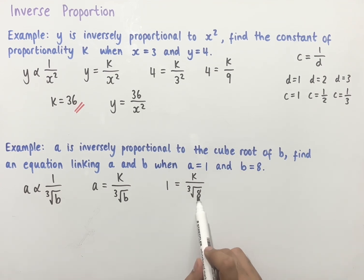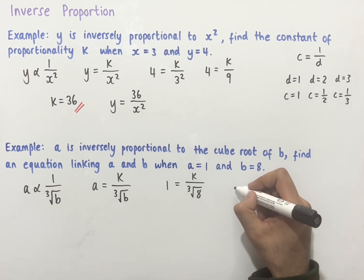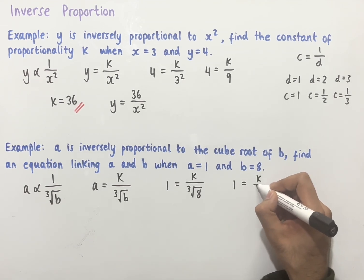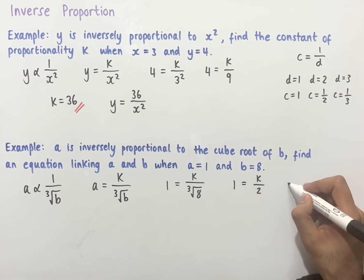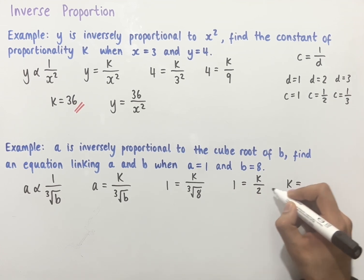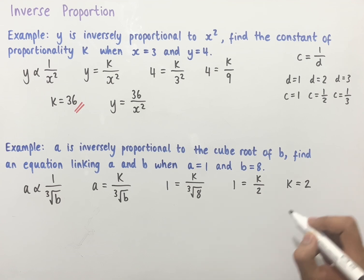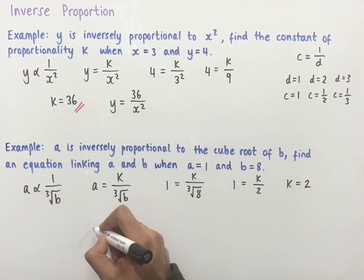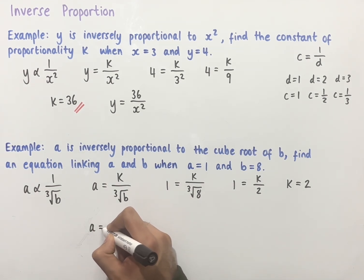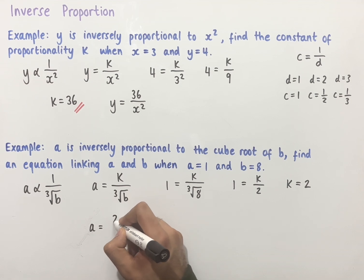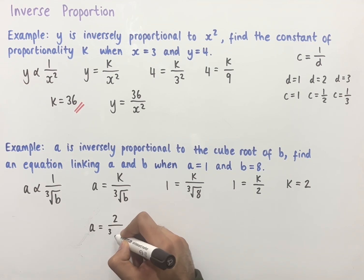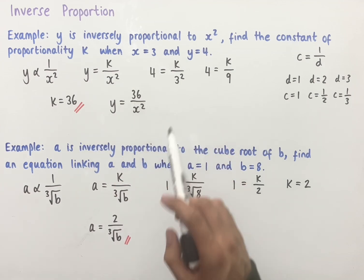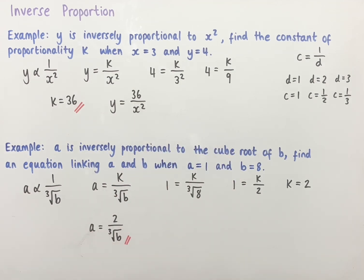The cube root of 8 is equal to 2, so we end up with 1 equals k over 2. Multiplying both sides, we find that k equals 1 times 2, which is 2. So the equation that links a and b together is a equals 2 over the cube root of b. And that is how you can form equations with inverse proportion.